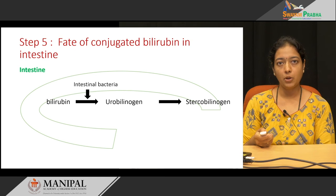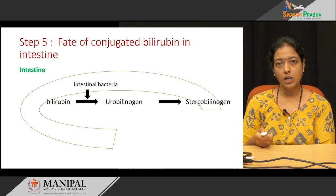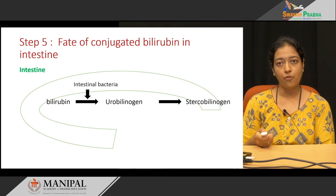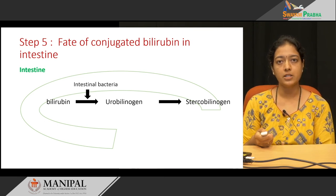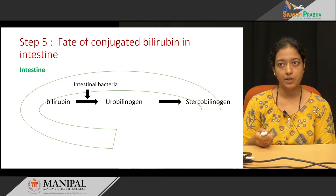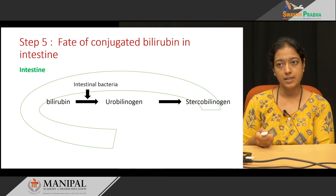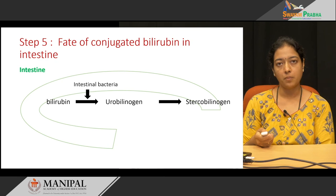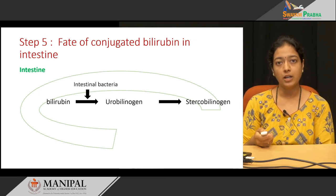Once the conjugated bilirubin from the liver comes to bile, from the bile it enters the intestine. When conjugated bilirubin reaches the intestine, it gets deconjugated and free bilirubin is formed. The free bilirubin is acted upon by intestinal bacteria to form urobilinogen, and urobilinogen further forms stercobilinogen. Both urobilinogen and stercobilinogen are colourless compounds.